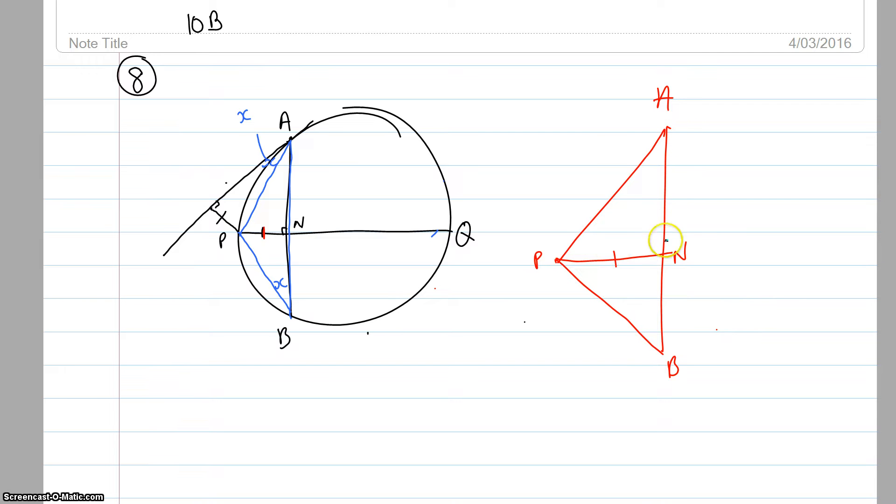Now this side here will be the same as this side here. No matter where you put this chord anywhere along, because we've got the diameter here, that N has to be halfway through the circle, and this chord here will have to be chopped in half. So therefore this side here must be the same as this side here, and there's a right angle there.